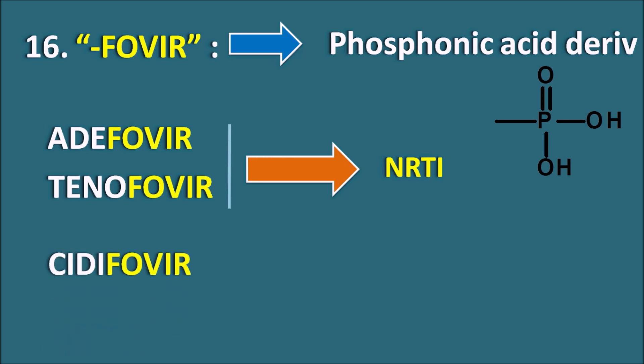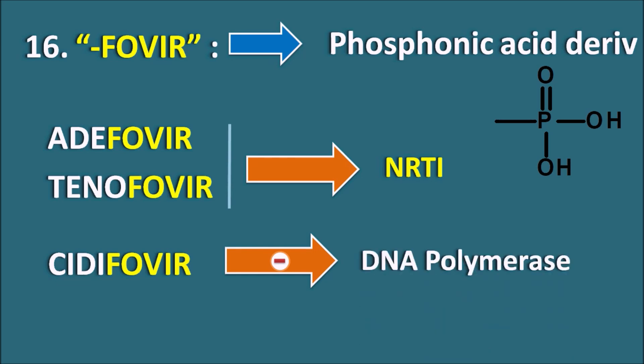Similarly we have another drug, Cidofovir. Cidofovir acts by a different mechanism — it is going to block the DNA polymerase enzyme. That's why this drug is useful in the treatment of cytomegalovirus infection, which can produce retinitis. So in the treatment of retinitis we can use Cidofovir.